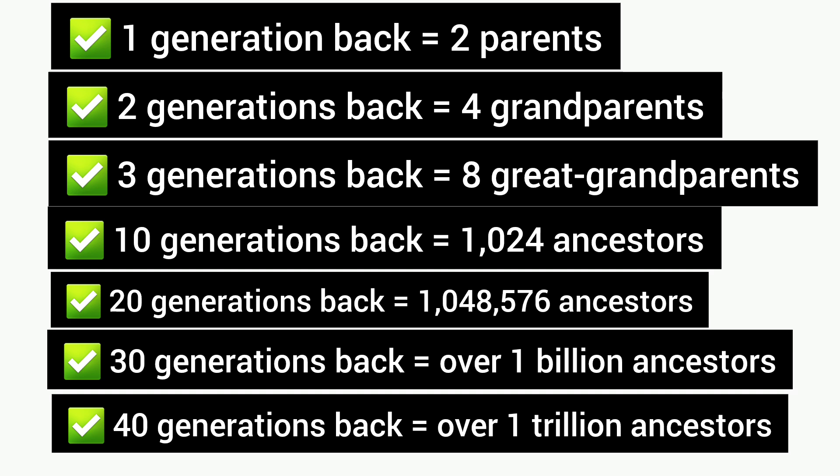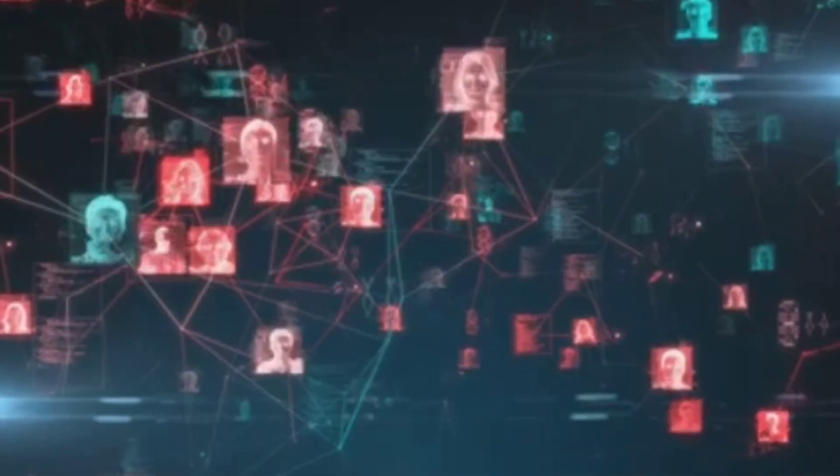But here's the important point. There were not a trillion people living on earth in the year 800. In fact, historians estimate that the entire population of Europe at that time was only about 30 to 50 million people. So how can your family tree have over one trillion people at that time?